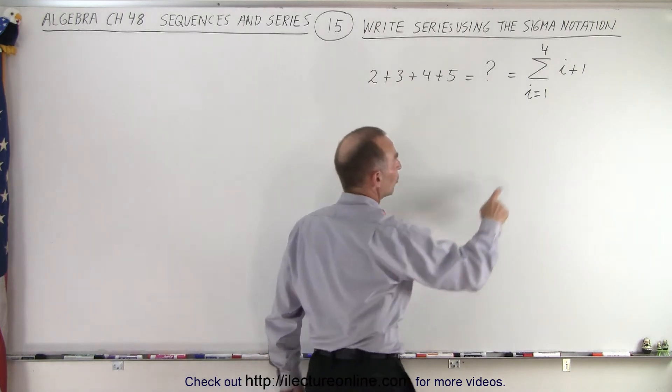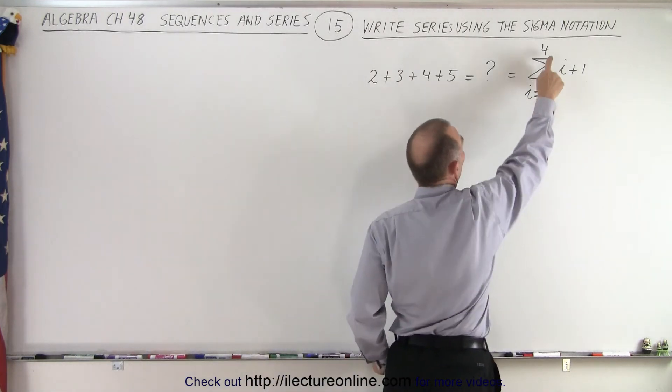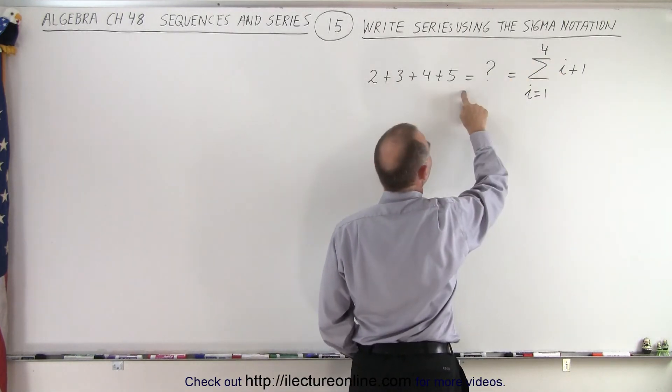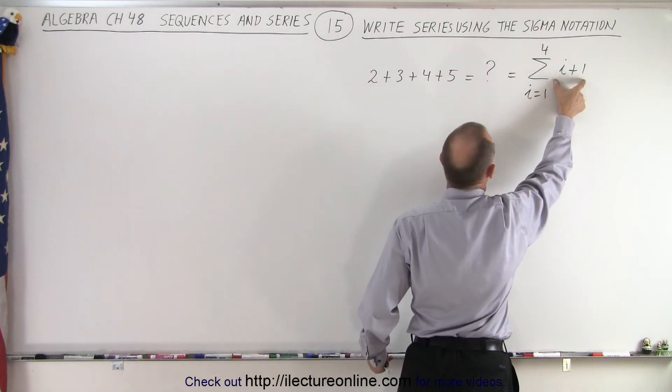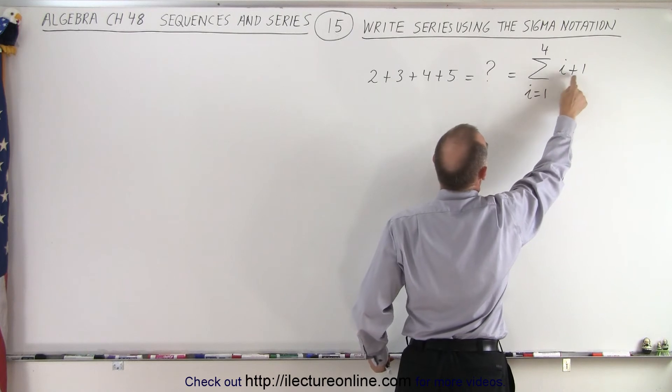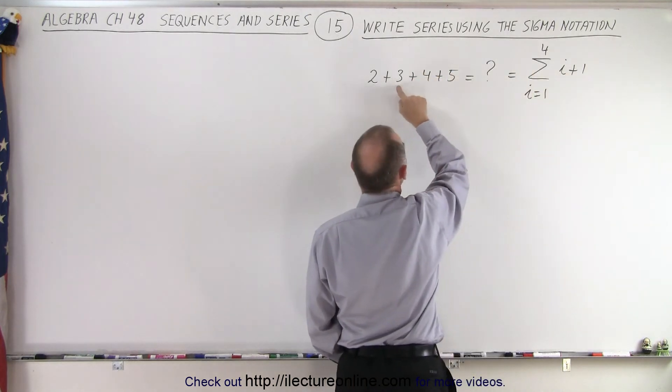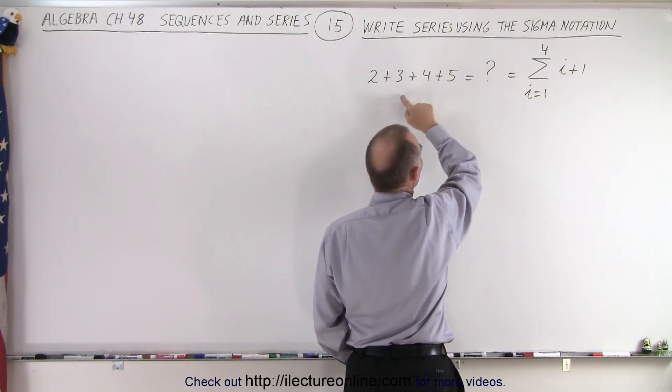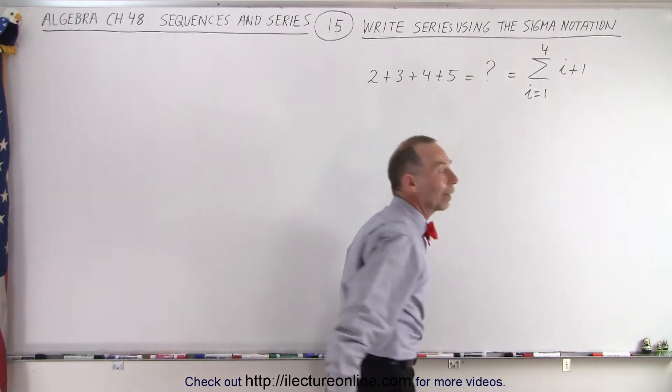Again, the idea is that you start at i equals one, the number on top is the number of terms, and then when you find your first term we need to find the equivalence. So when i is equal to one, add one to it, you get two, and then you can see that if each term increases by one, we just simply need to write it like that.